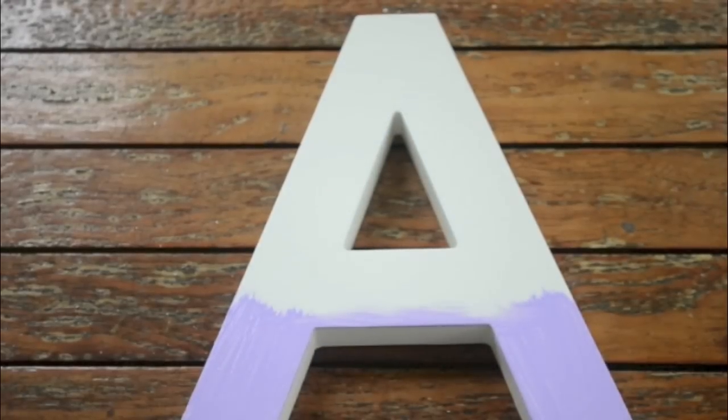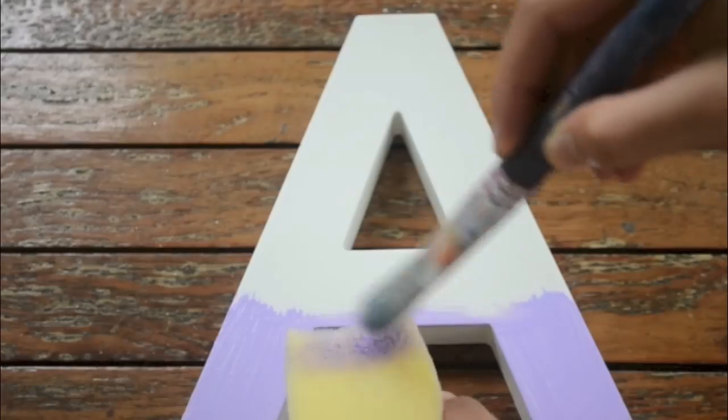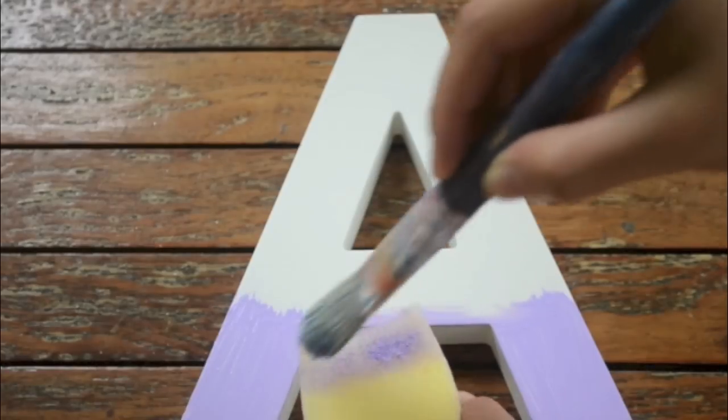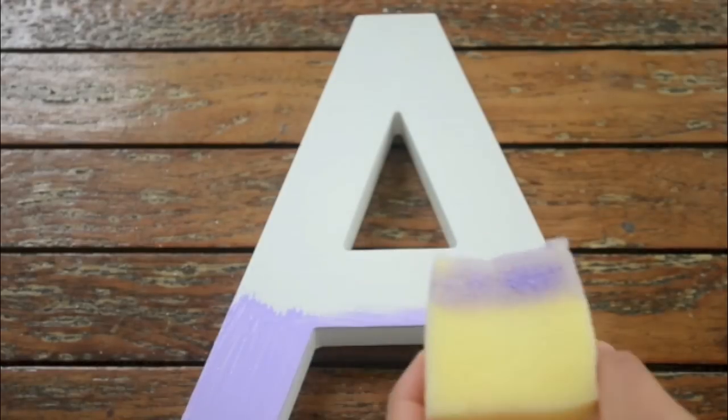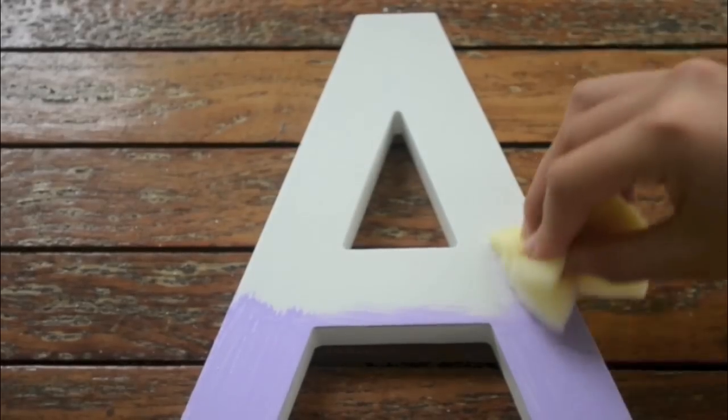And then to actually create the ombre effect, it's really simple. Take the remaining paint that you had in your brush and just brush it across the sponge but just in a small stripe.